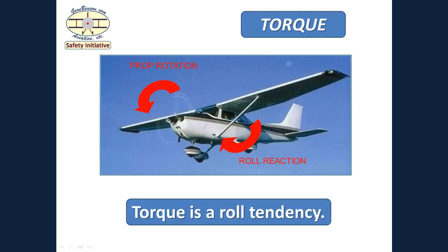Torque is a roll tendency, and it operates whenever the propeller is turning. We recall that the propeller is turning clockwise as viewed from the pilot's seat, or counterclockwise as viewed from the front of the airplane as seen here. For every action, there is an equal and opposite reaction, so the airplane wants to roll opposite the propeller rotation, or to the left as seen by the pilot. The more mass of the crankshaft and the propeller, and the higher the RPM, the more roll tendency is produced. While torque is a roll tendency, it also results in a yaw tendency when the airplane is on the ground, because the left tire is pressed harder to the runway and more friction is created, causing the airplane to want to yaw to the left.